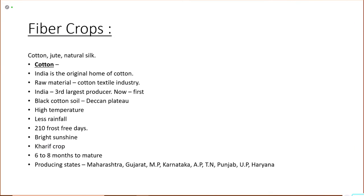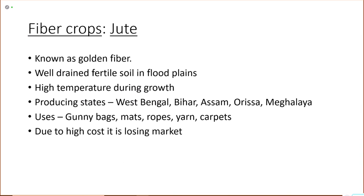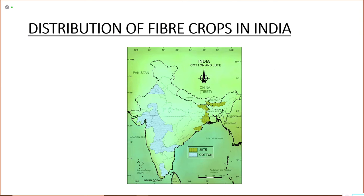Black cotton soil is very favorable for cotton cultivation. It requires high temperature, less rainfall, nearly 210 frost-free days, and bright sunshine during ripening — there should be no rainfall, only bright sunshine for the cotton boll to blossom. It is a Kharif crop and requires 6 to 8 months to mature. Cotton is grown in Gujarat, Maharashtra, Tamil Nadu, Andhra Pradesh, Karnataka, and also in Punjab, the northern part of Rajasthan and the western part of Haryana.